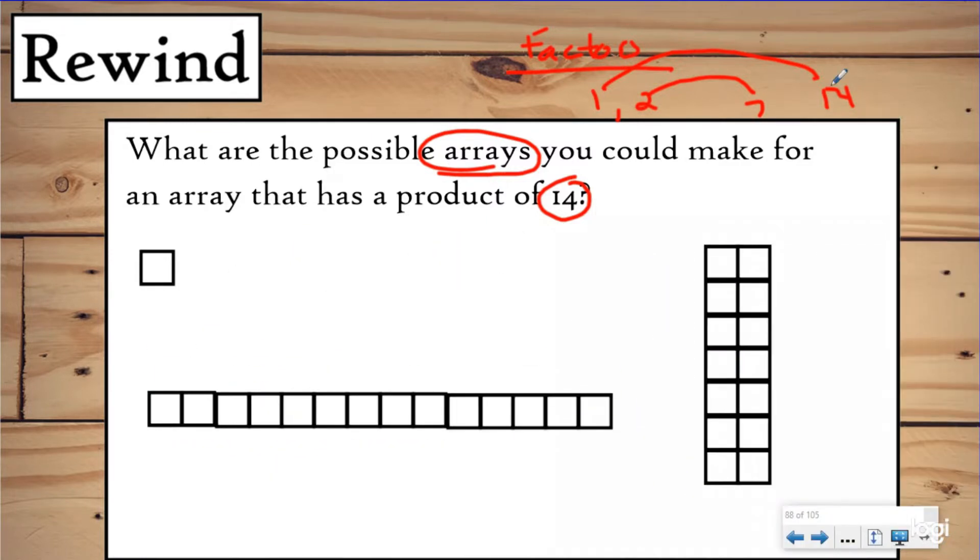So my factor rainbow is one times 14 or 14 times one, or two times seven and going backwards seven times two. So I want to make those arrays. I just made these arrays. And so here is 14 is my length dimension and I have one for my width. And then here I have two and seven. I could turn these and make this vertical, make that horizontal, but that's just a commutative property. These are the two different arrays that I can make.